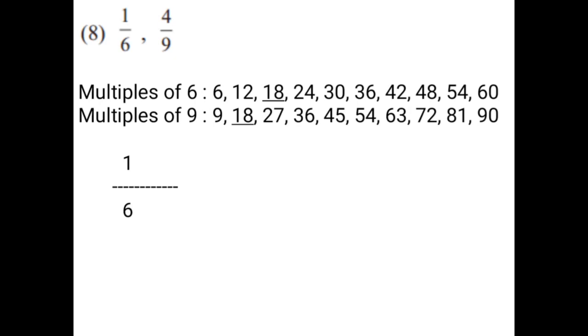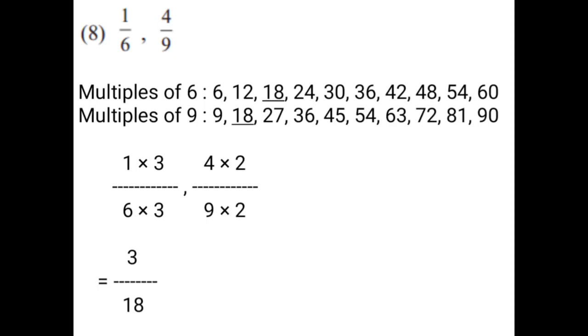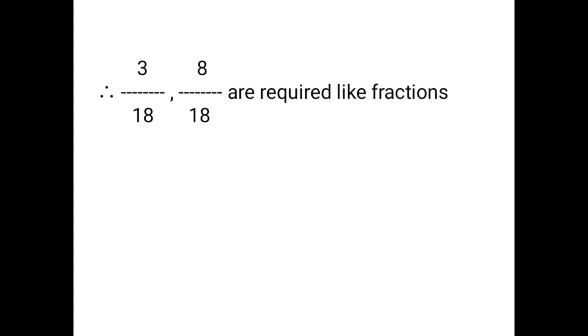1 upon 6 multiplied by 3 on numerator and 3 on denominator. 4 upon 9 multiplied by 2 on numerator and 2 on denominator. That is equal to 1 × 3 = 3 upon 6 × 3 = 18. And 4 × 2 = 8 upon 9 × 2 = 18. Therefore, 3 upon 18 and 8 upon 18 are the required like fractions.